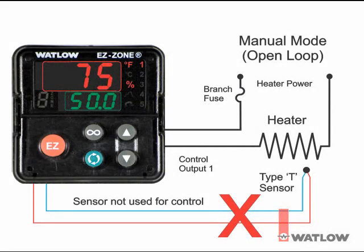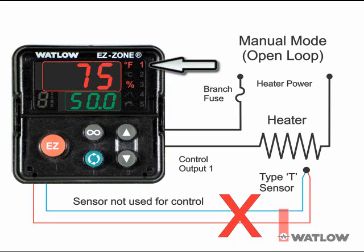In Manual mode, the controller does not use the sensor input to control the load, but operates in open loop. The controller still updates the readings from the sensor if connected. The user specifies the amount of power to supply the load. The percent indicator shows the manual setpoint is in power. The output indicator flashes at a rate proportional to the selected output.